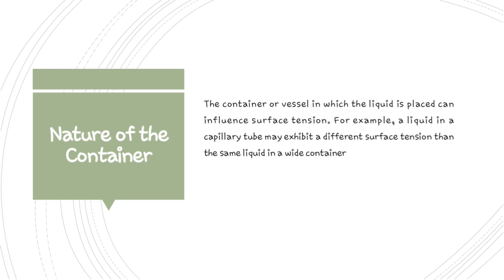The next factor is nature of the container. The container or vessel in which a liquid is placed can influence surface tension. For example, a liquid in a capillary tube may exhibit a different surface tension compared to when the same liquid is placed in a wider container. You may have already observed this during your practicals. The surface tension exhibited in a capillary tube versus that in a wider container like a beaker is comparatively different. Therefore, the container also plays a role in surface tension.